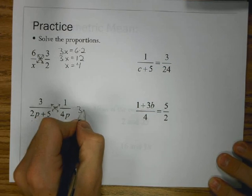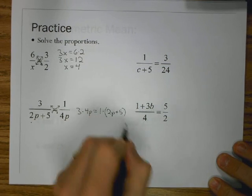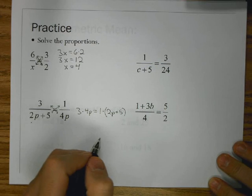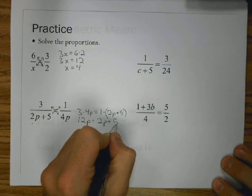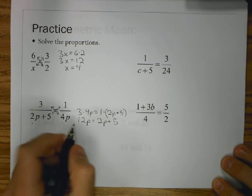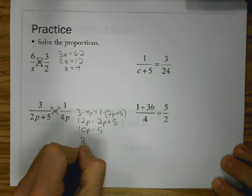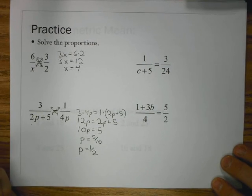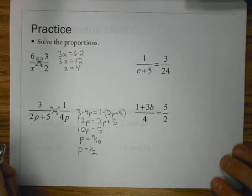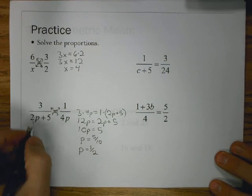If I look at this proportion, I do cross product. I would have 3 times 4P equals 1 times the quantity 2P plus 5. After I do cross product, I'm just going to multiply everything out. I get 12P equals 2P plus 5. Subtract 2P from both sides, I get 10P equals 5. Divide both sides by 10 and I get P is 5 over 10, which is just 1 half. It's okay. It's a fraction.